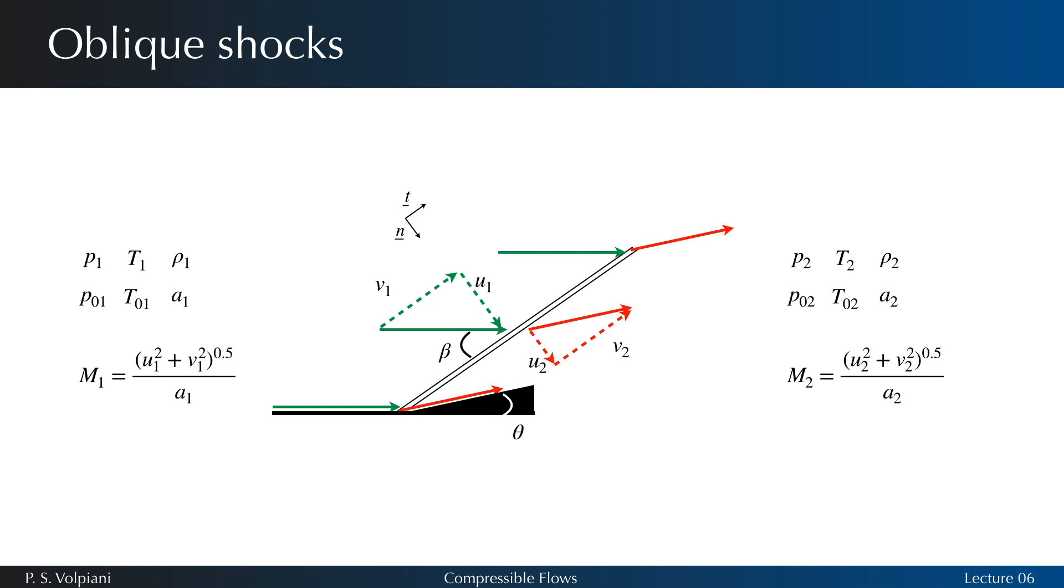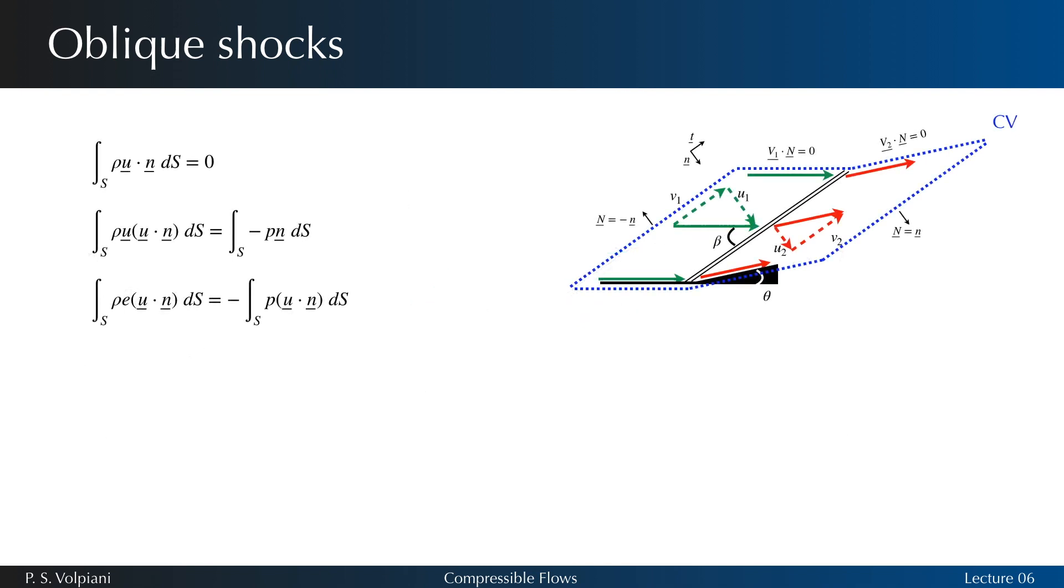In the shock reference frame, we have that capital V1 equals its component U1 in the N direction plus its component V1 in the T direction. We have the same thing for the velocity capital V2. To establish the relations linking the states on either side of the discontinuity, we apply the stationary Euler equations in integral form, taking into consideration the control volume shown in the figure. The vector capital N designates the unit normal vector pointing out of the control surface.